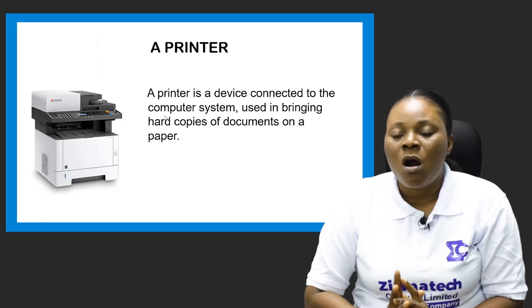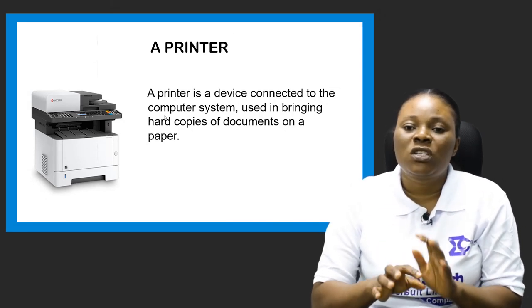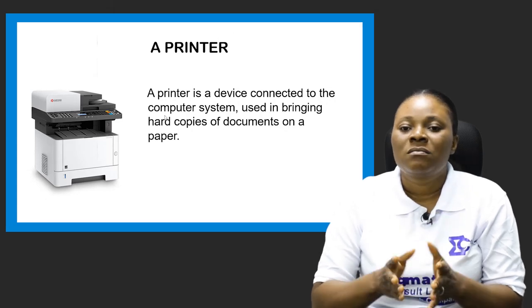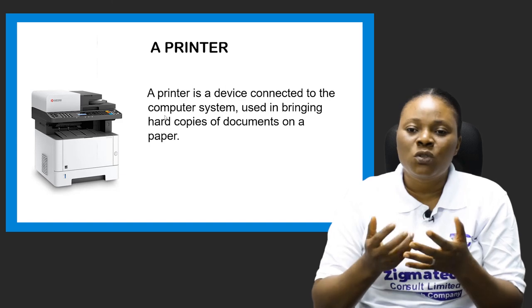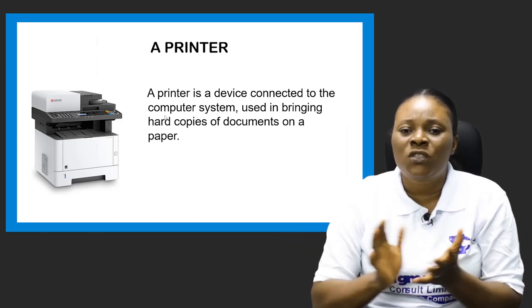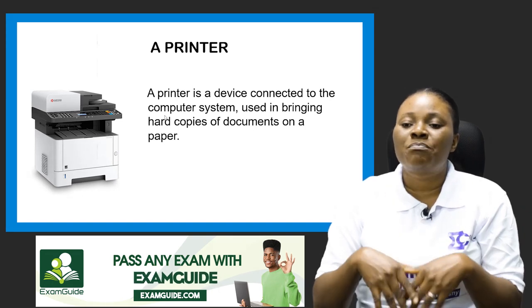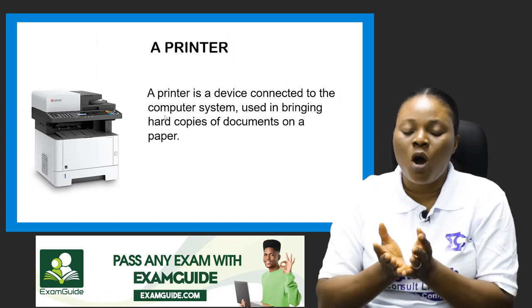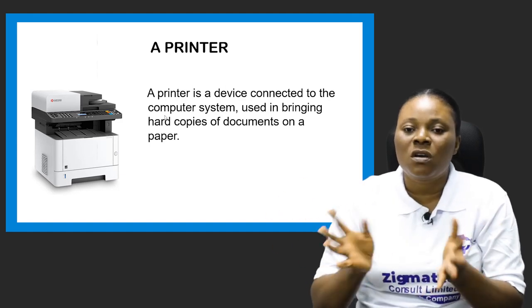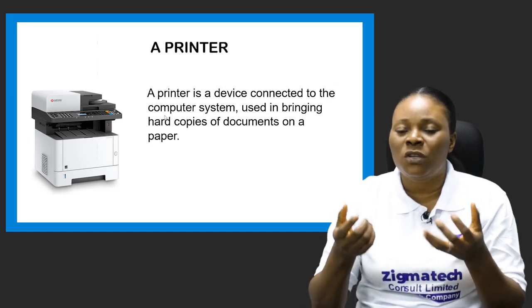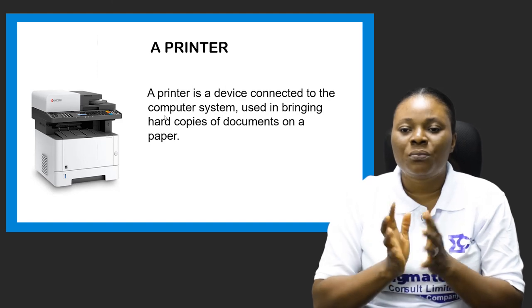We also have the printer, which works together with the computer system. Once you are done typing on your computer, the work is displayed on your computer monitor, giving you the soft copy of the document. For you to be able to have hard copies of documents, a printer is needed. A printer is a device connected to the computer system used in producing hard copies of documents on a piece of paper. Once you finish typing with your computer keyboard, it displays on your monitor as a soft copy, and you use your printer to bring it out on paper.